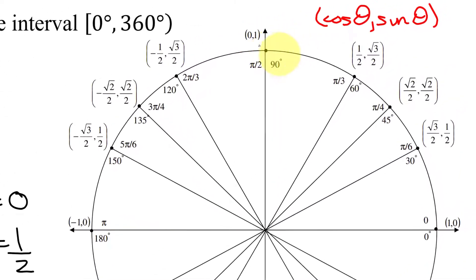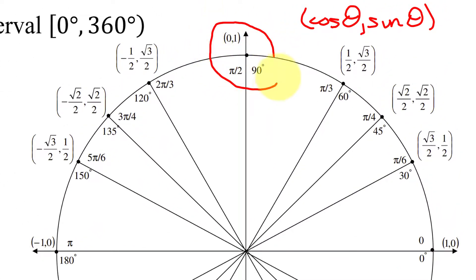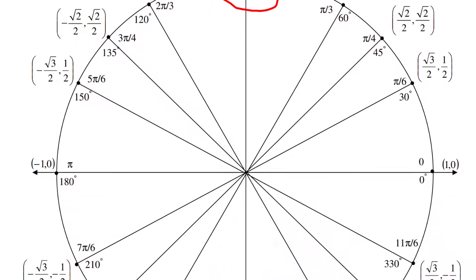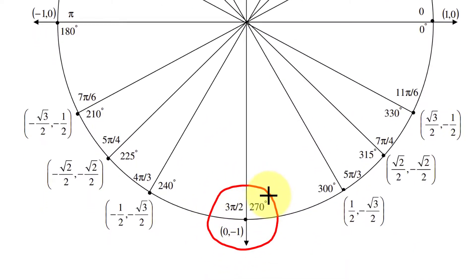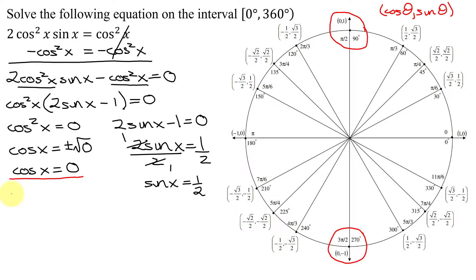The x-coordinate is zero here at 90 degrees, and the x-coordinate is also zero here at 270 degrees. So my first two solutions are x equals 90 degrees and x equals 270 degrees, because this problem asks for solutions in degrees.